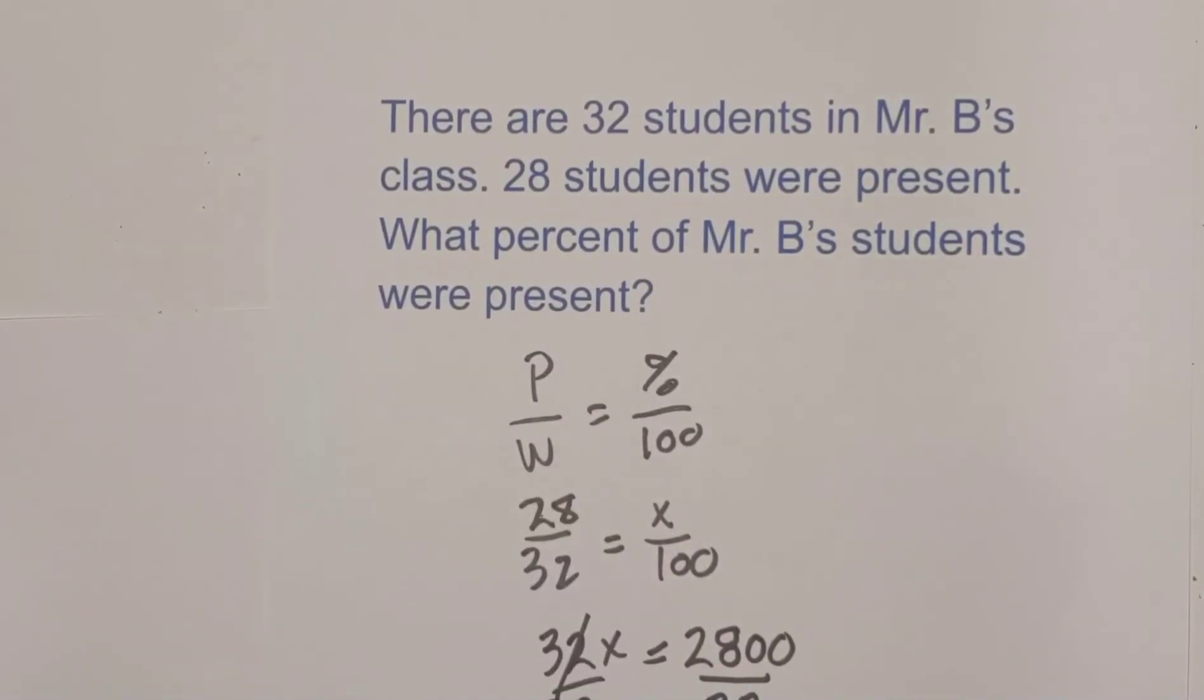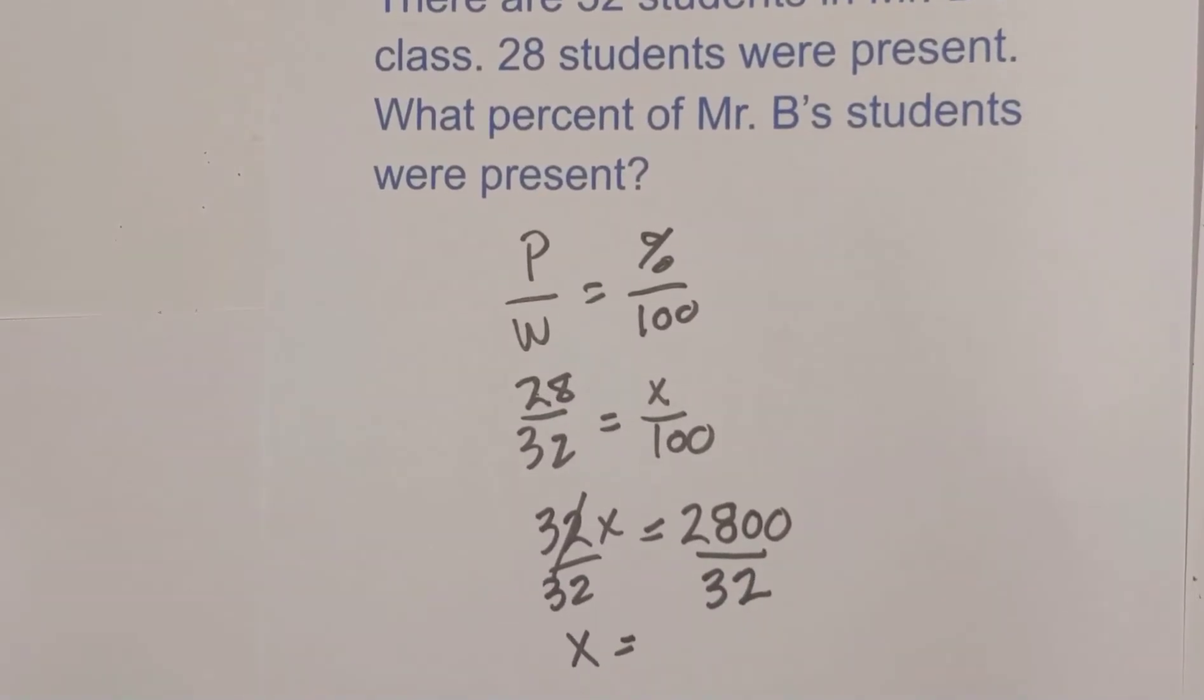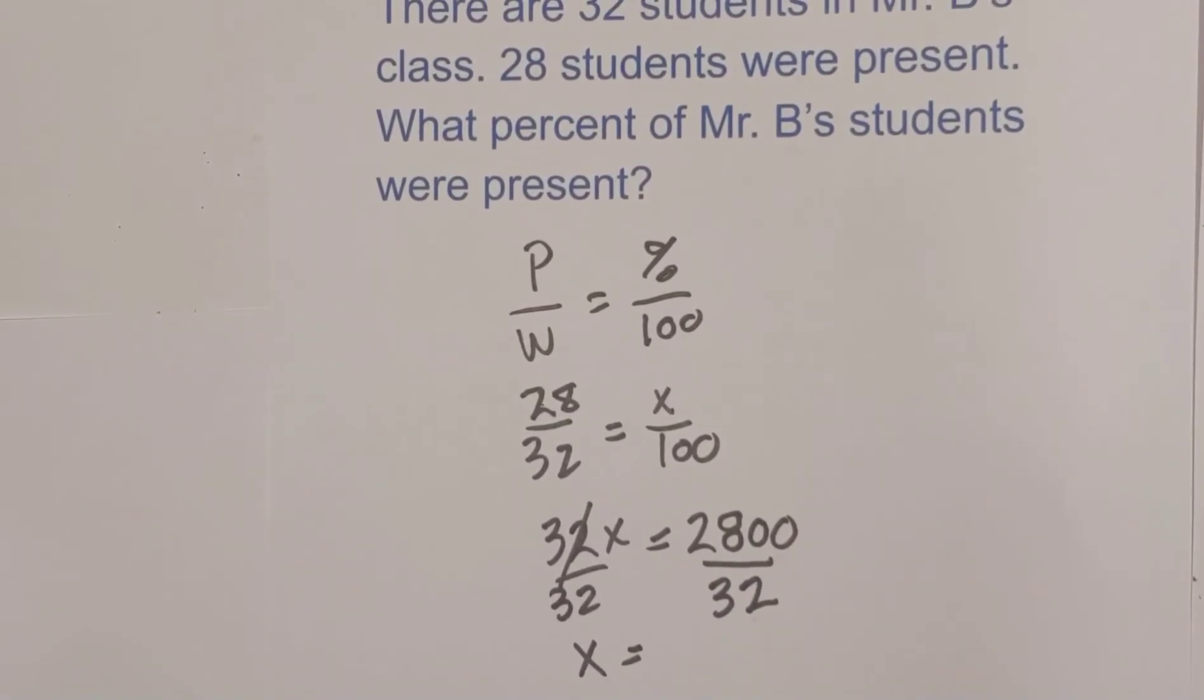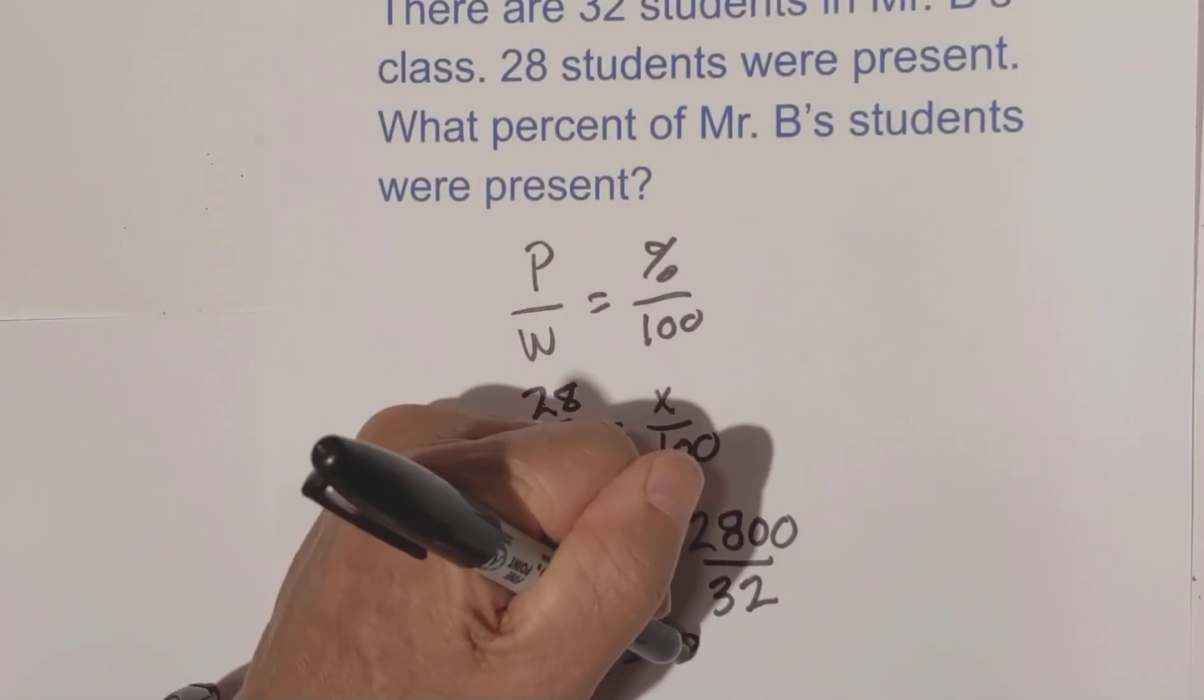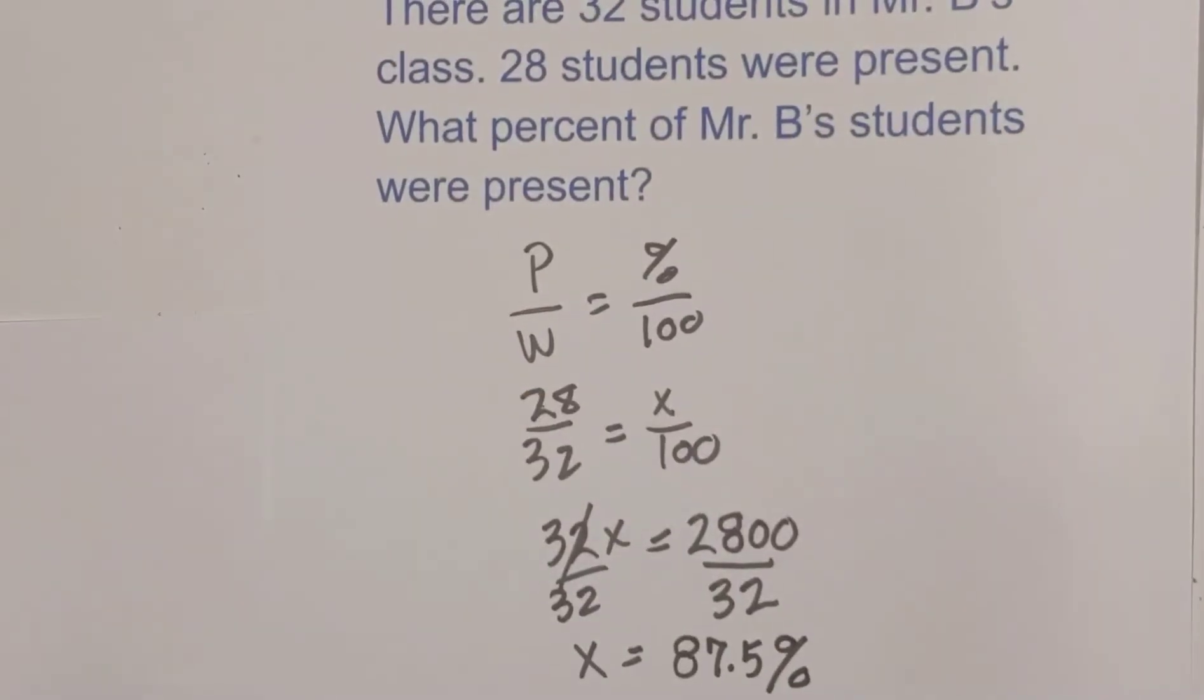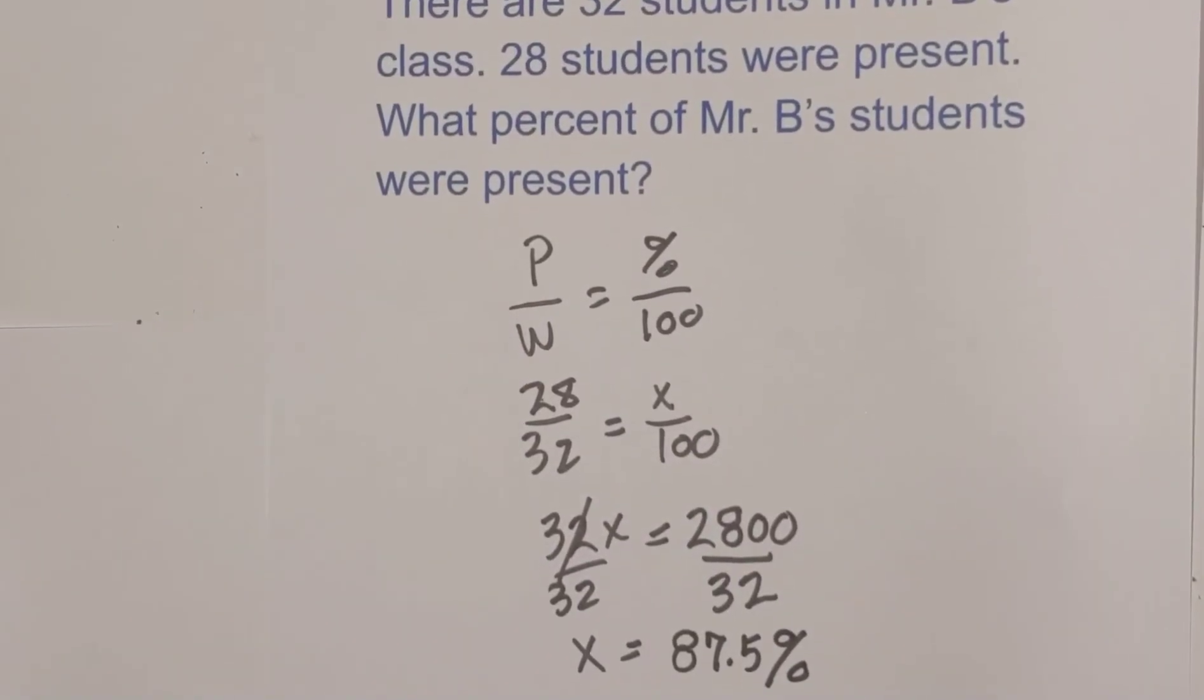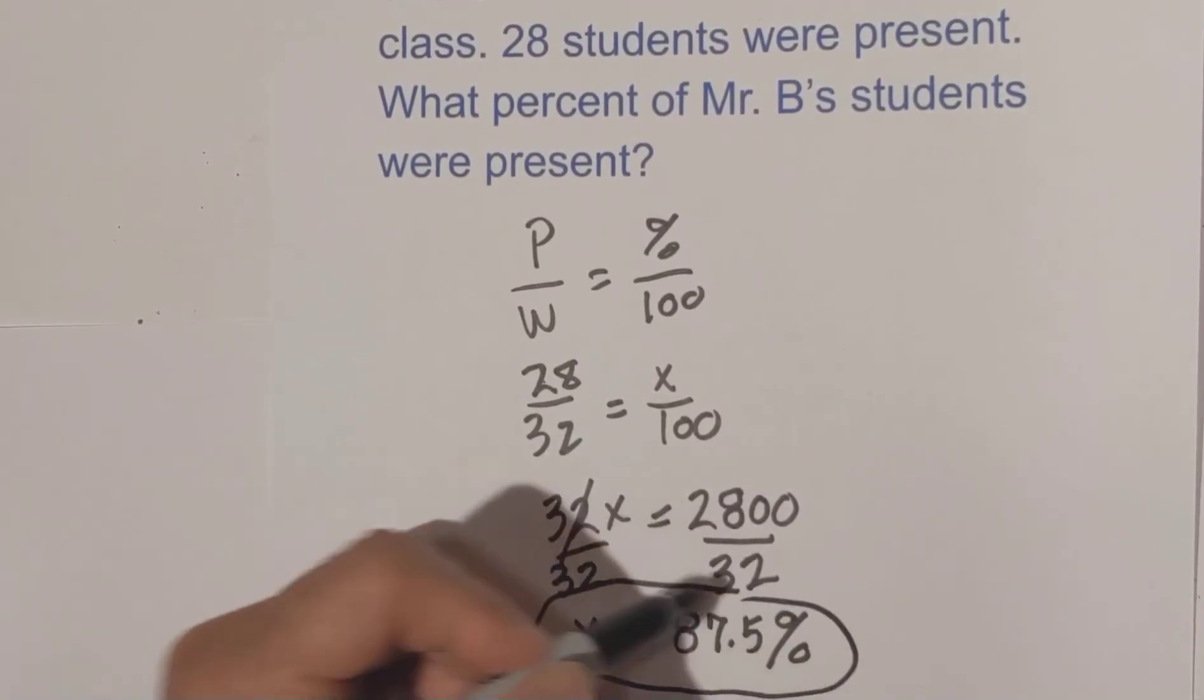And if you get your, whoops, I'm about off the page. Let me move this up a little bit. And if you get your calculator out or if you do long division, 2800 divided by 32 is actually 87.5. So Mr. B has 87.5% of his students present.